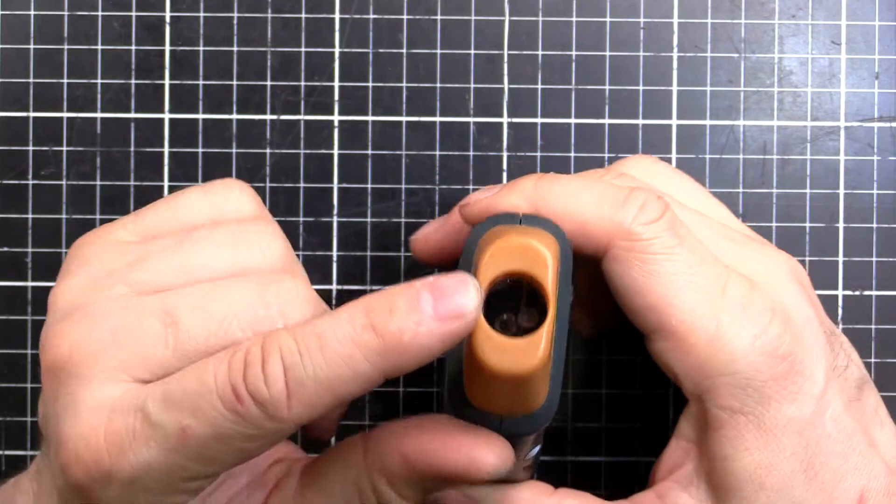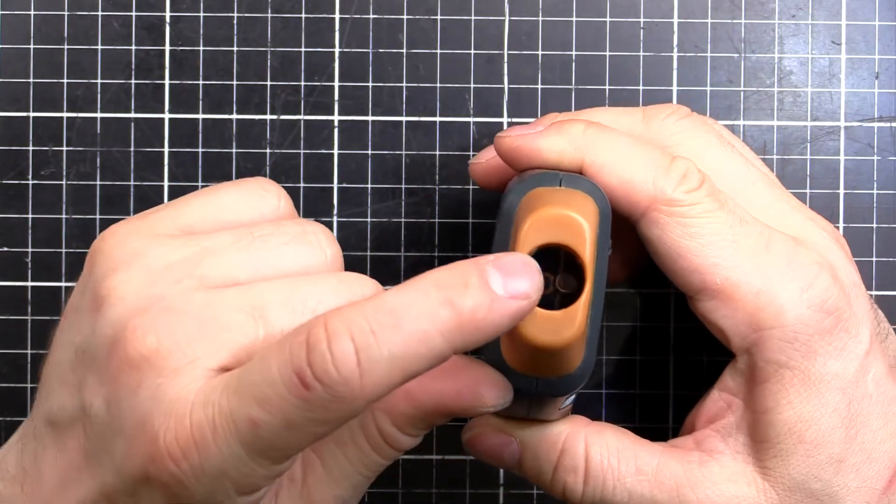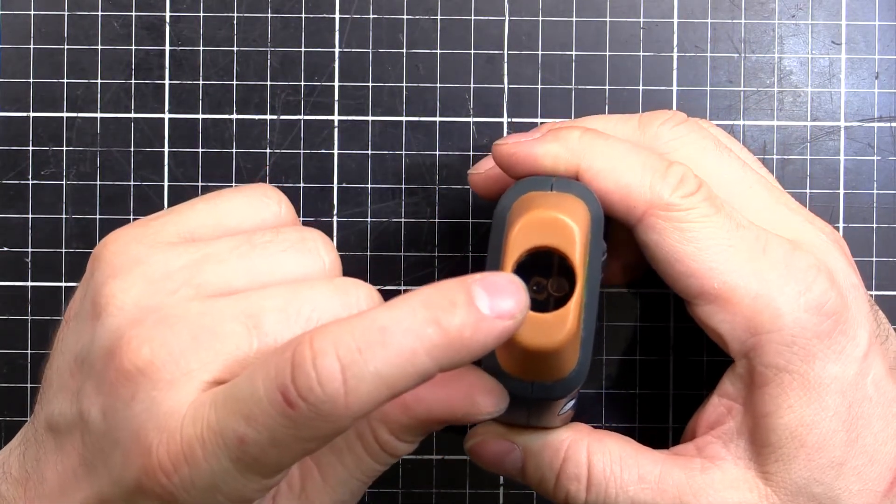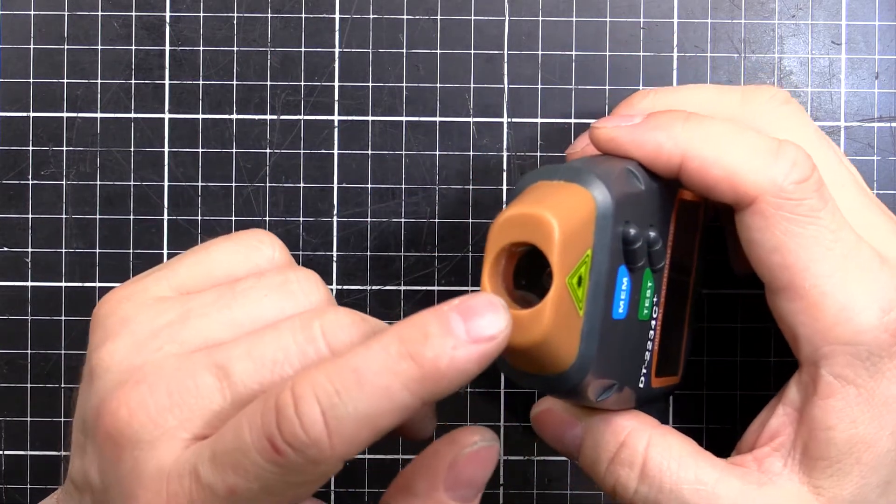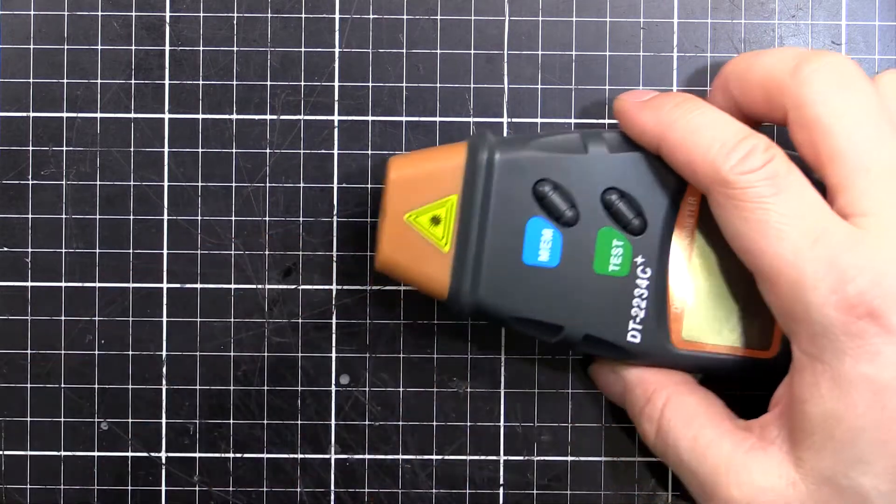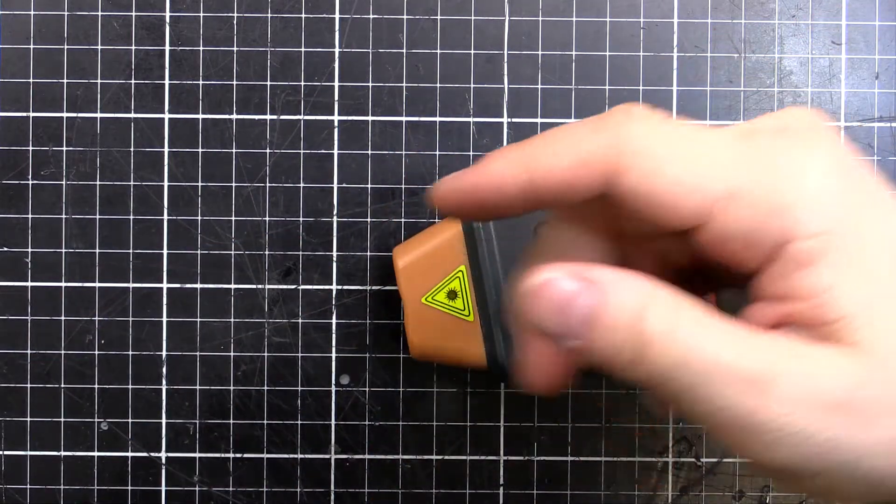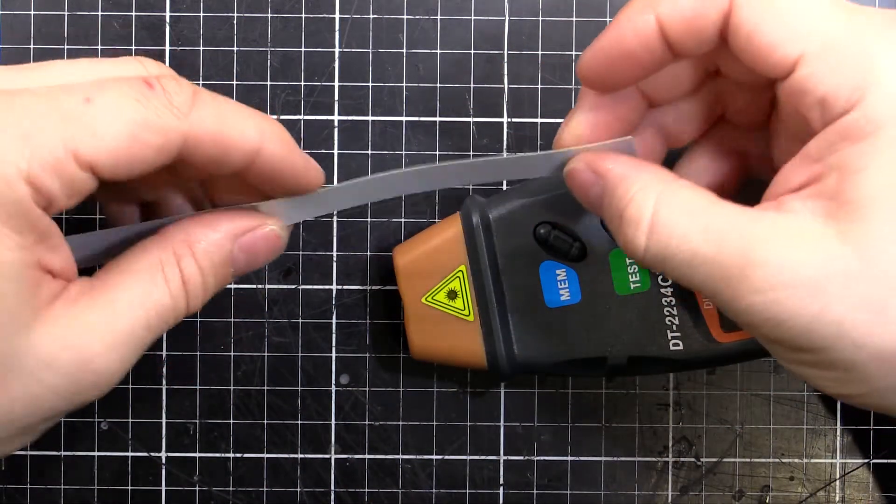The way it works is it shoots the laser out and there's a little photo transistor or some sort of light sensor in there that detects the red light bouncing back. What you do is you've got something that's spinning and you put a bit of this reflective tape on it, the same sort of stuff you see on high-vis vests.